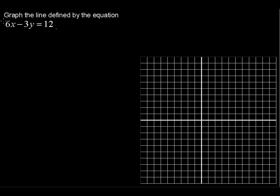Graph the line defined by the equation 6x minus 3y equals 12. Well, you could plot points, as you may have seen that method. You can also use the slope-intercept form.